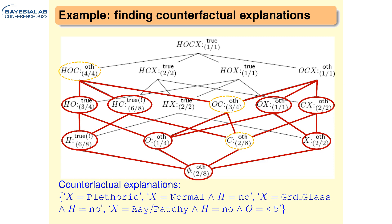This is how we find counterfactual and sufficient explanations. In every lattice element, we do probabilistic inference for all possible value combinations of nodes not represented by that element. Notably, we're not exploiting any Bayesian-network-specific properties here — this method of computing explanations is essentially model agnostic. It could be done with any kind of model that takes inputs and computes outputs.